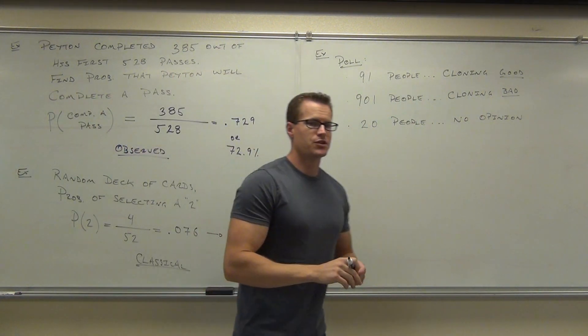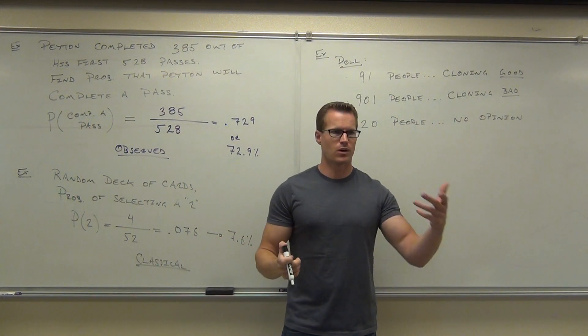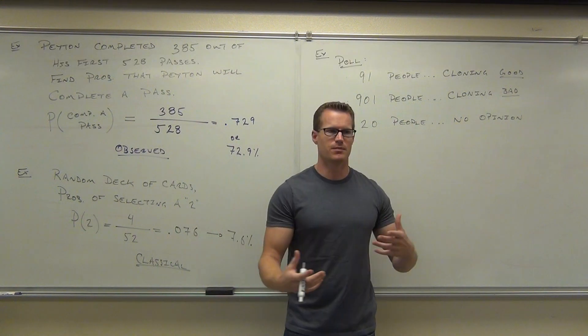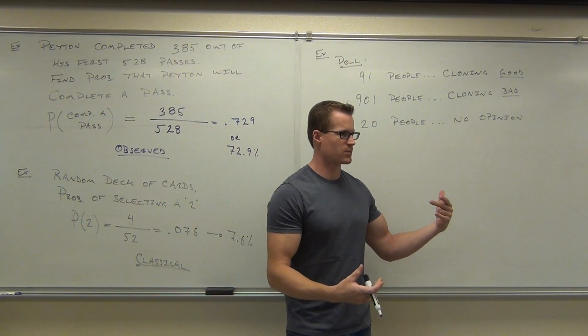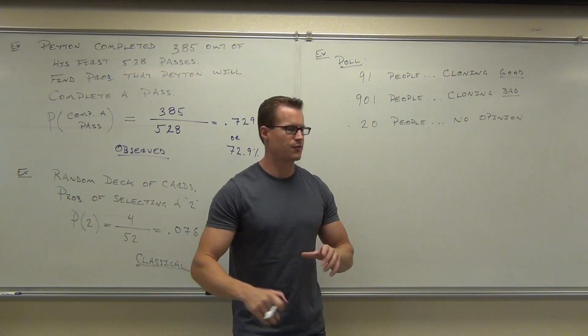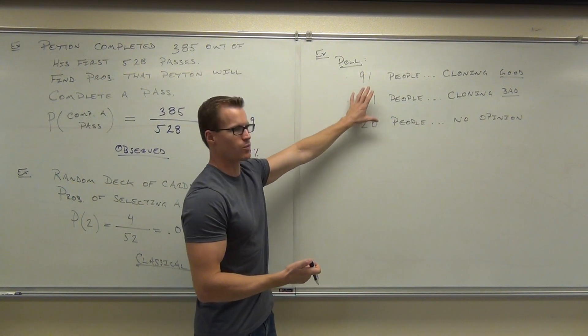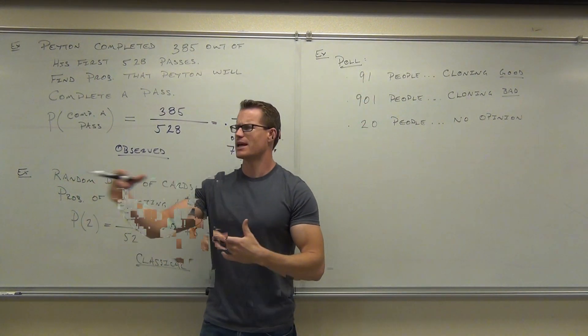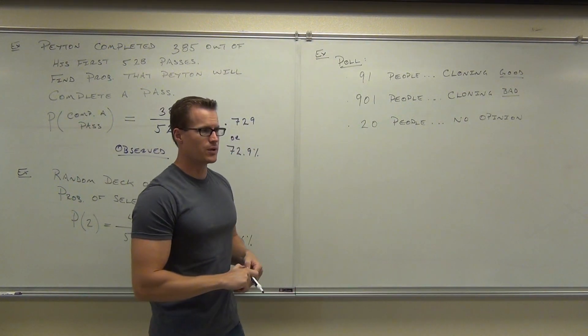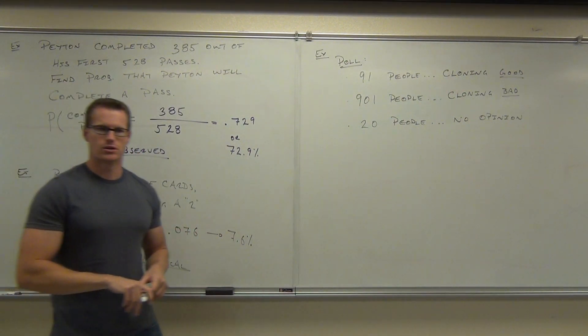If this was a random poll, this should give us some indication about the general public. Whether you can go outside right now and ask somebody about cloning, whether they think it's a good or a bad idea. If this was collected randomly in the methods that we've used earlier in this class. Remember talking about those? Like the systematic sampling, or the stratified, or the cluster sampling, all that good stuff. So let's pretend this was done that way. It should give us some indication about everyday people.